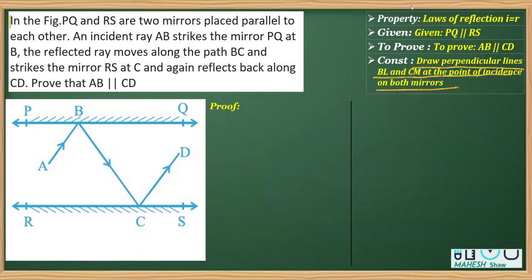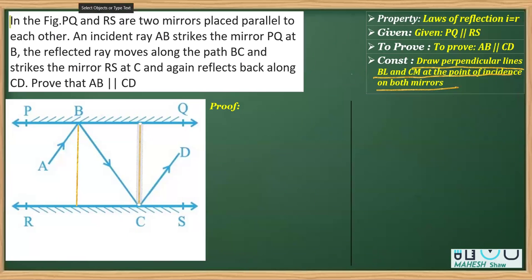We draw the first perpendicular BL and the second one CM. So BL and CM are the two perpendiculars drawn at the points of incidence.